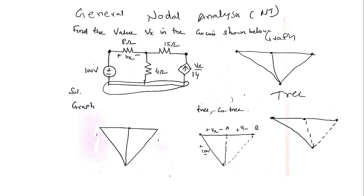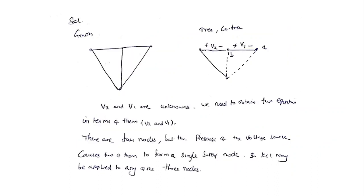Now I am going to mark the voltages to find. I need to find Vx as given in the question (plus Vx minus), and I assume a voltage V1 across the 15-ohm resistor. We already have the 100-volt source, and we know the current flowing through the dependent source is Vx/14. The next step is to apply nodal analysis. We need to find two unknown voltages, V1 and Vx, and obtain two equations in terms of Vx and V1 so we can solve them.